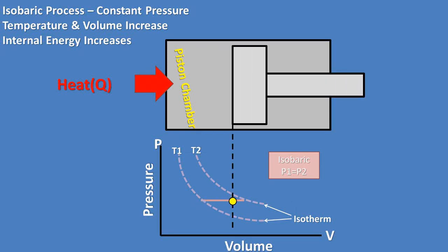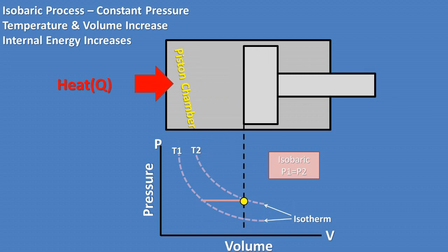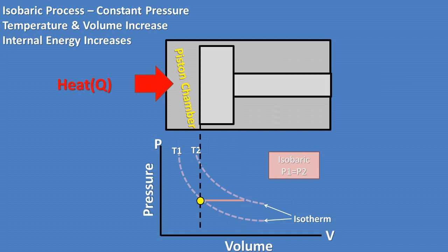In this video, we'll be going over an isobaric process. This is a thermodynamic process where pressure remains constant while heat or Q is added or removed into the system, which causes the temperature and volume to change. Also note that the internal energy of the gas in the system also changes.